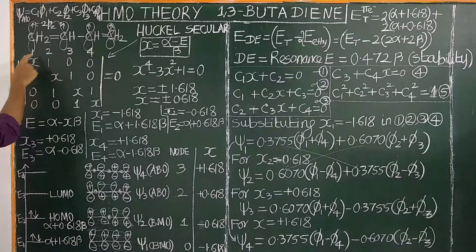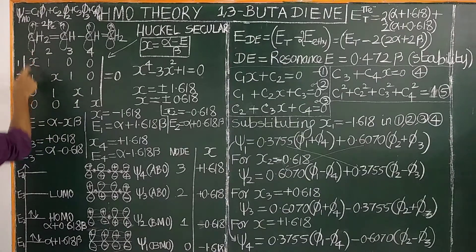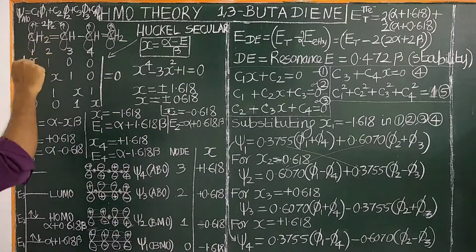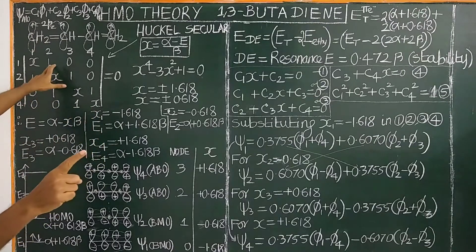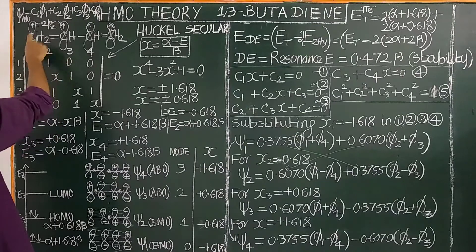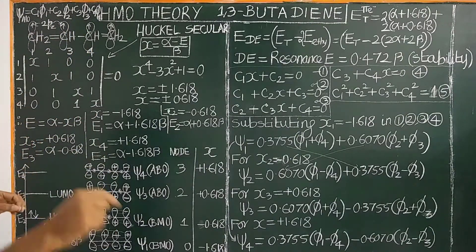The diagonal elements (1,1), (2,2), (3,3), and (4,4) are all x. For off-diagonal elements: if atoms i and j are neighbors (e.g., 1,2), then H_ij / β = 1. If atoms are not neighbors (e.g., 1,3), then H_ij = 0, because there is no exchange or resonance between them.